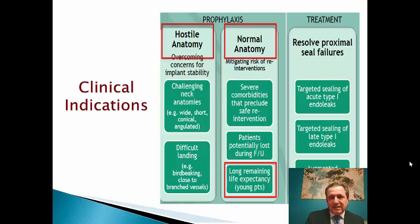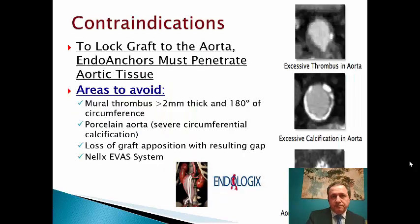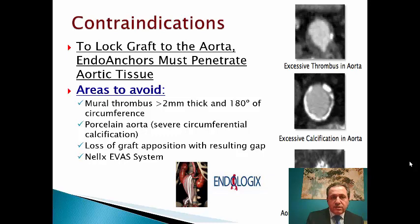Or you can use endo anchors as treatment if you have an early or late type 1 endoleak. Contraindications: you cannot use it if the aortic wall is more than 2 mm away from the EVAR fabric, or if you have excessive thrombus, or if you have a porcelain aorta, or if the patient has a Nellix EVAS system.